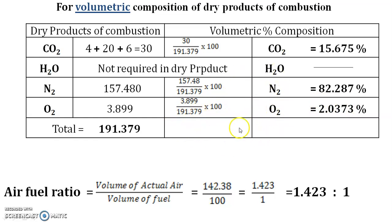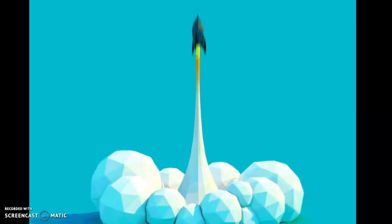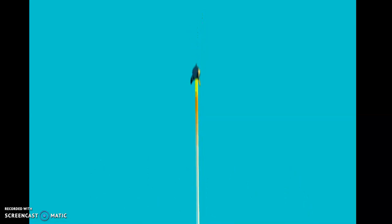If air-fuel ratio is also asked, simply take the volume of actual air divided by the volume of fuel, expressed as 1.423 to 1 in this case. Whenever you are required to give the air-fuel ratio, give the answer in this ratio format. Thank you all for listening. If you have any doubts regarding the combustion calculation, please feel free to contact, and best of luck for your examination.